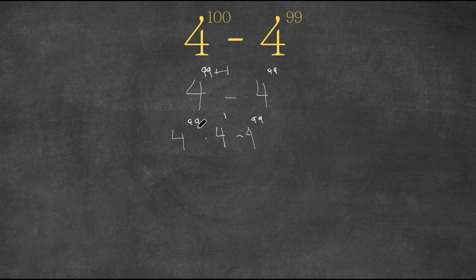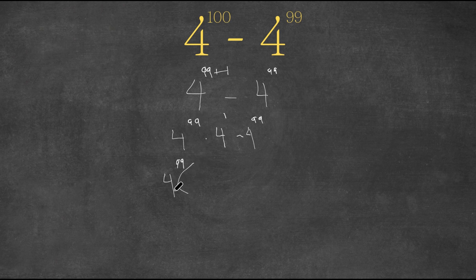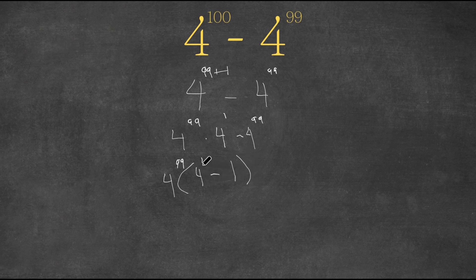So now, as you can see, we have two 4 to the power of 99s. And what we're going to do is we're going to factor 4 to the power of 99 out to simplify this a little more. So we get 4 to the power of 99 times open bracket 4 to the power of 1 minus 1 close bracket, which gives us 4 minus 1 times 4 to the power of 99.